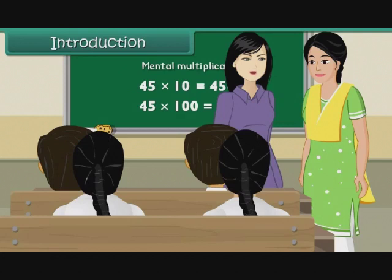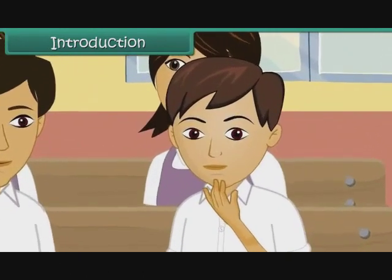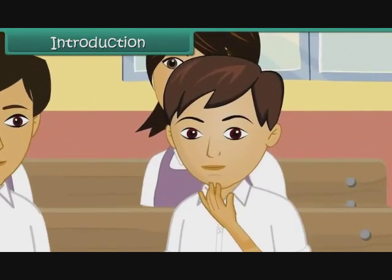Miss Amita performs a quick mental calculation and says, There are 180 students in the other five sections of class 3. If this section is included, the total strength of class 3 is 215. Miss Amita is long gone, but Arun is still wondering how she managed to compute so fast.